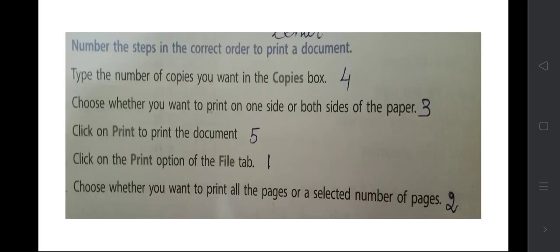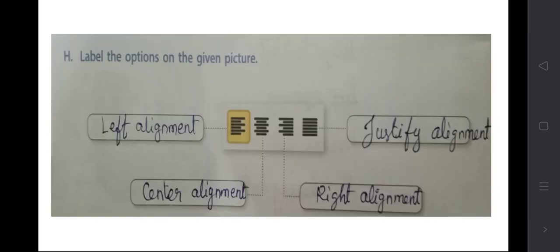Number the steps in the correct order to print a document. Step one: click on the Print option on the File tab. Step two: choose whether you want to print all pages or a selected number of pages. Step three: choose whether to print on one side or both sides. Step four: type the number of copies. Step five: click Print to print the document.